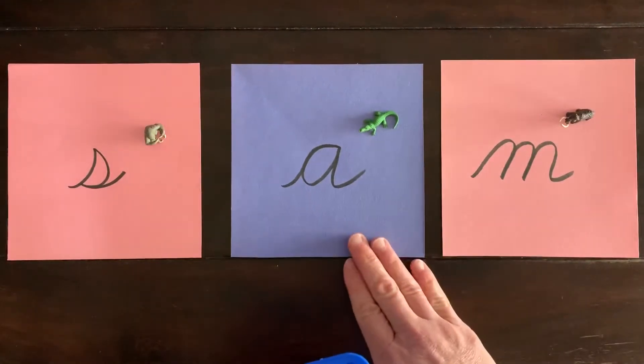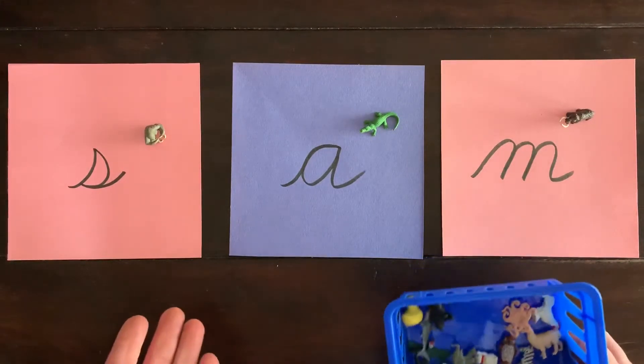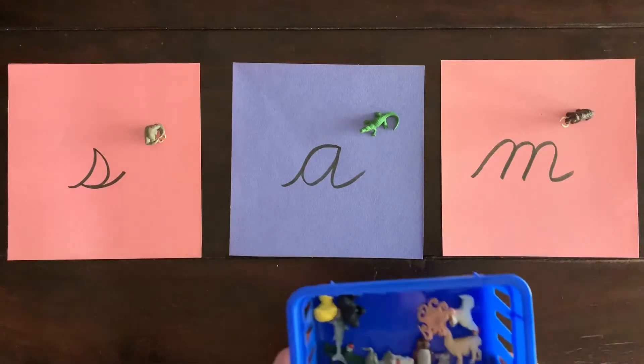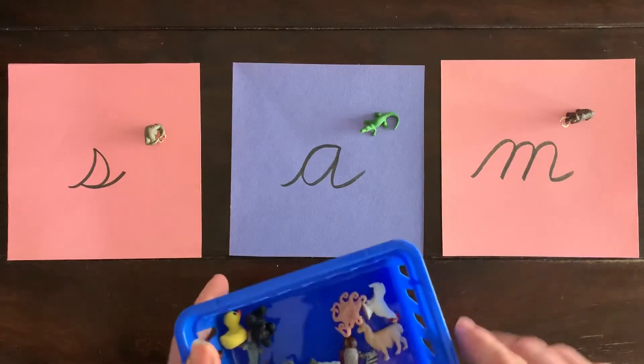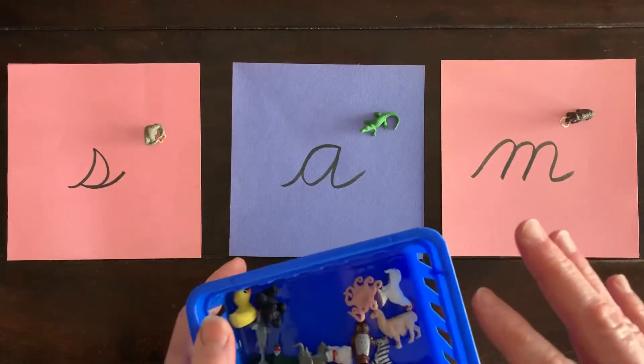So after doing the beginning sounds and your child is comfortable with the beginning sounds, you can work in end sounds and middle sounds. Just be aware of what objects you have available so that you're not asking the impossible from your child.